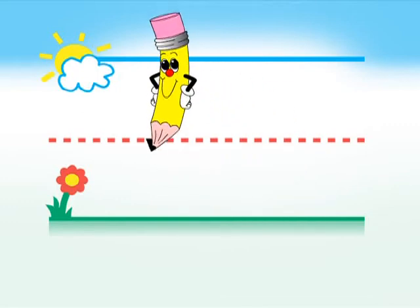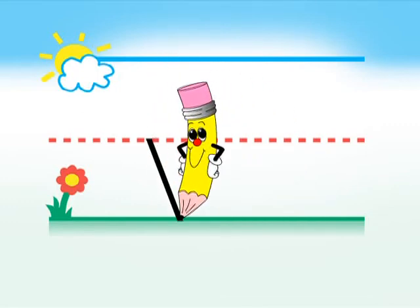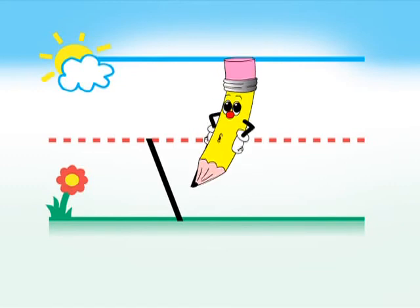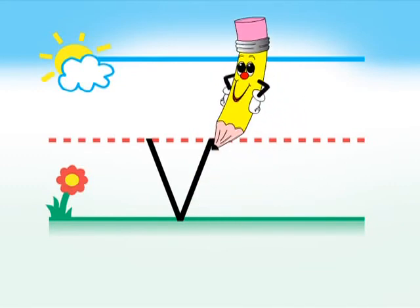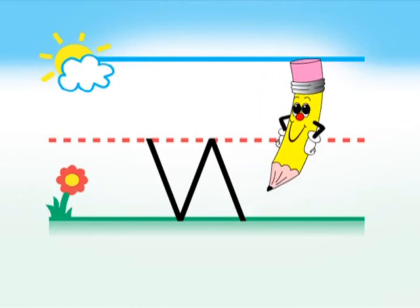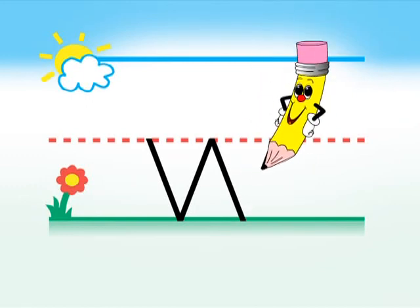Start at the fence and slant from the left down to the ground. Go back up to the fence and slant from the right to the ground to form the letter V. Go back to the fence and slant down to the ground. Go back to the fence again and slant back down to the ground.